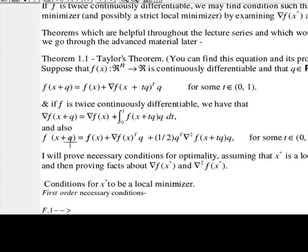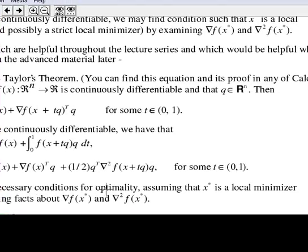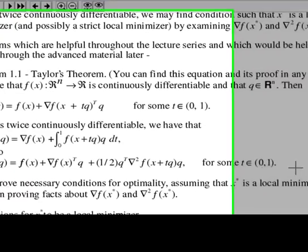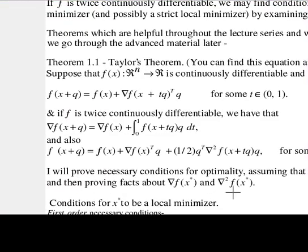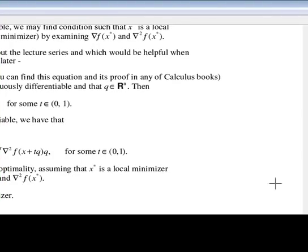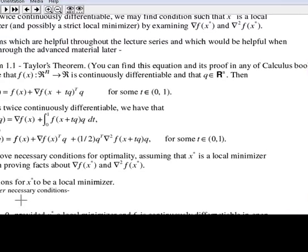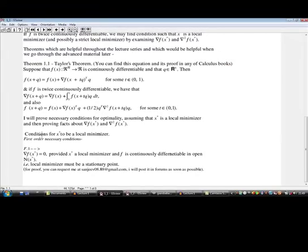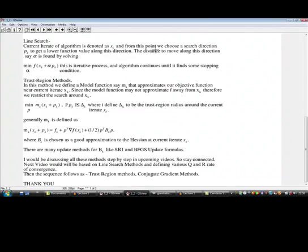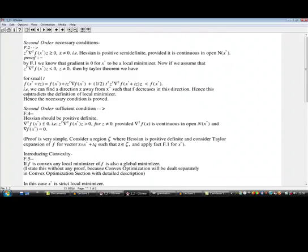Now here are our conditions for x* to be a local minimizer. I will prove necessary conditions for optimality assuming that x* is a local minimizer, and then proving facts about ∇f(x*) and the Hessian of f. Here are our conditions for x* to be a local minimizer: there are three conditions—first-order necessary conditions, second-order necessary conditions, and then second-order sufficient conditions.